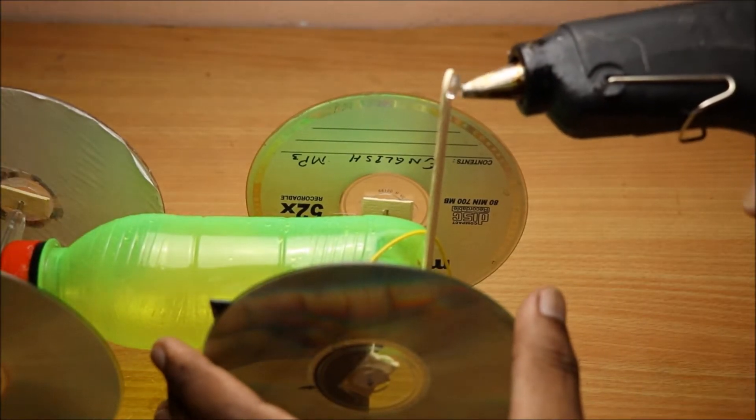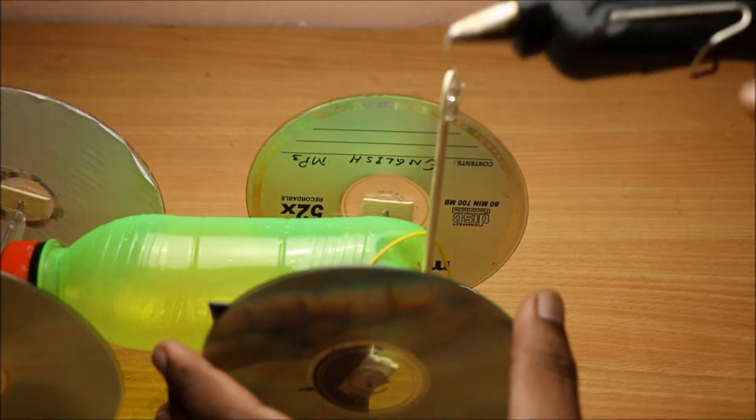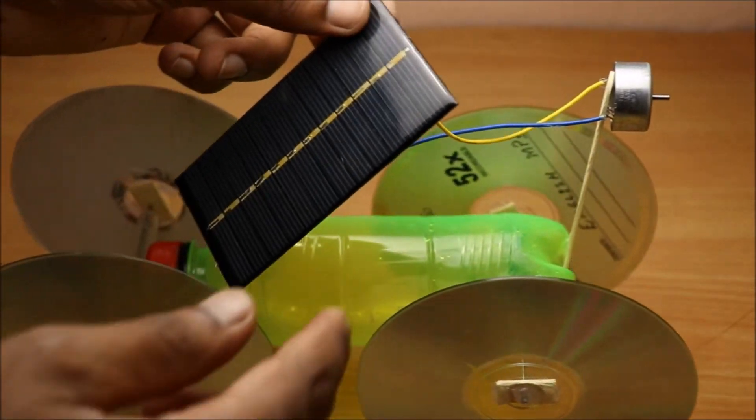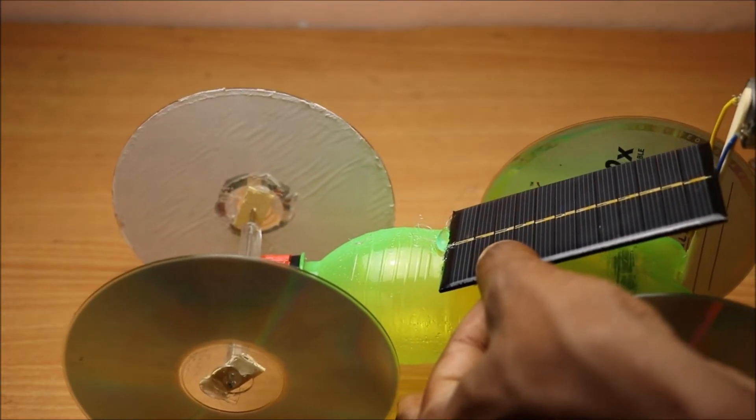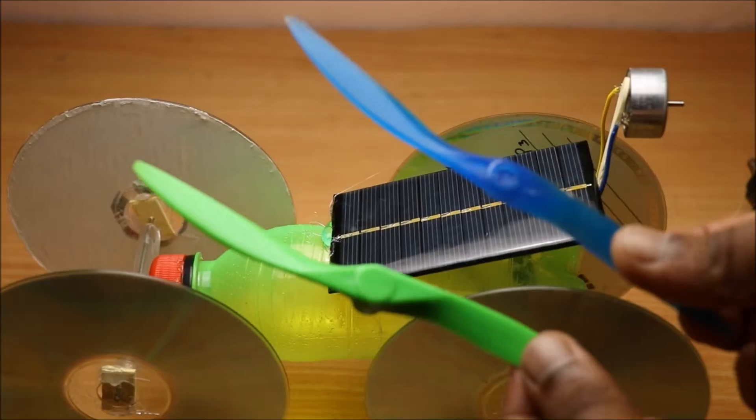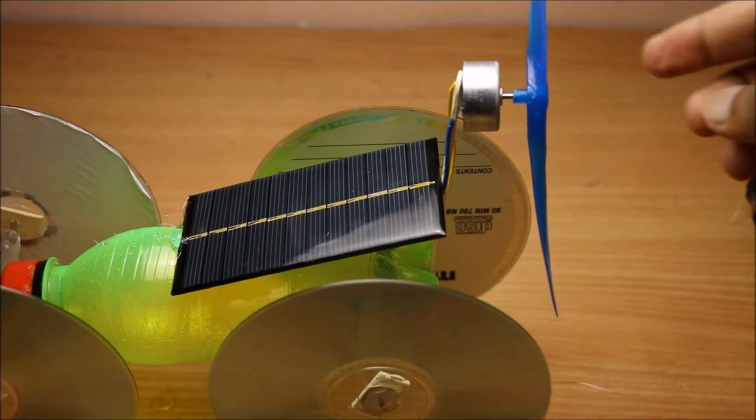Attach the DC motor to the stick using a hot glue gun, and fix the solar panel and the propeller.